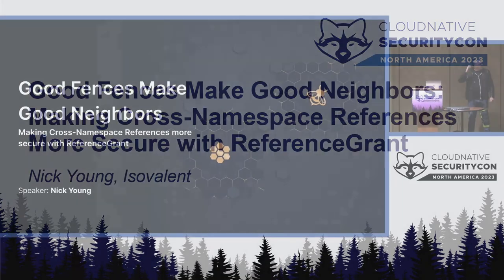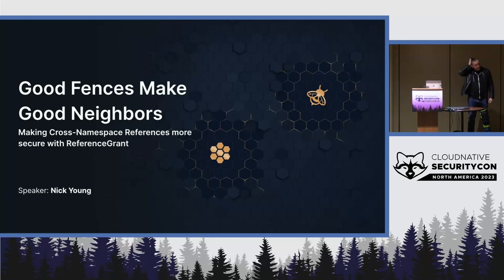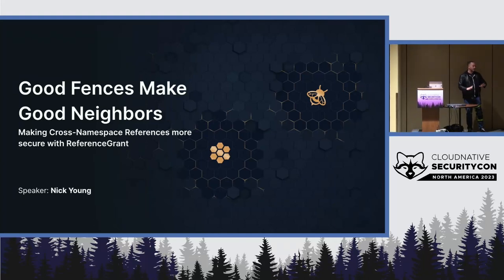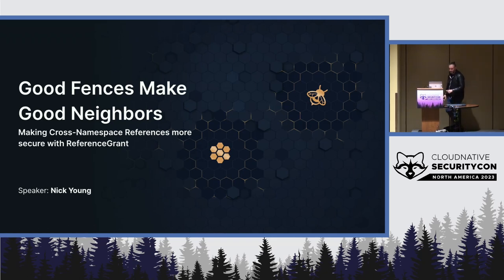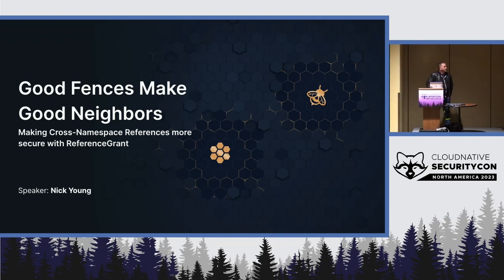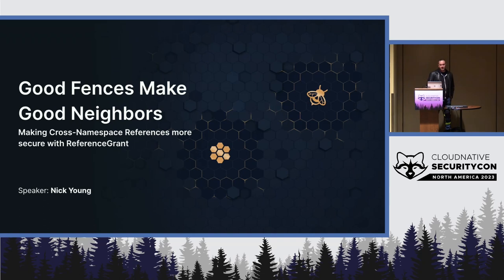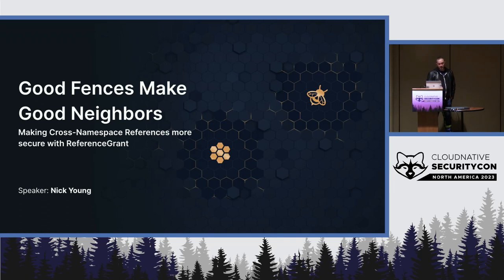This is 'Good Fences Make Good Neighbors.' I am Nick Young. I'm not going to be doing much walking around because of this thing, but let's get started. My name is Nick Young. I am a senior systems engineer with Isovalent. I do a lot of work on the Cilium service mesh there, but my other hat is that I'm a maintainer on Gateway API, and that's where all of this work on reference grant mainly comes from.